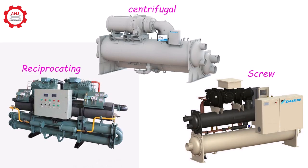As a conclusion, the only difference between centrifugal, reciprocating, and screw chillers is the compression technology adopted by the compressor and all the rest are the same.